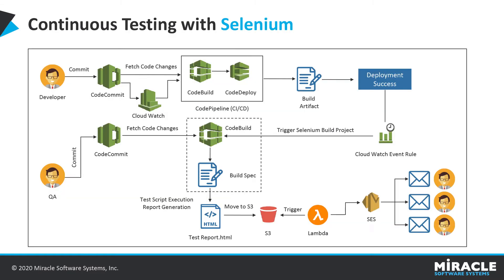Moving on to the architecture diagram: on the left-hand side we can see a developer and a QA person who will commit their code into the CodeCommit repository. CodeCommit is a version control service by AWS, similar to Git. The developer commits Angular code and the QA person commits Selenium code. The CodePipeline — the CI/CD pipeline — consists of two AWS services: CodeBuild and CodeDeploy. CodeBuild fetches the latest code from CodeCommit, builds it, and CodeDeploy deploys it to the respective environment.